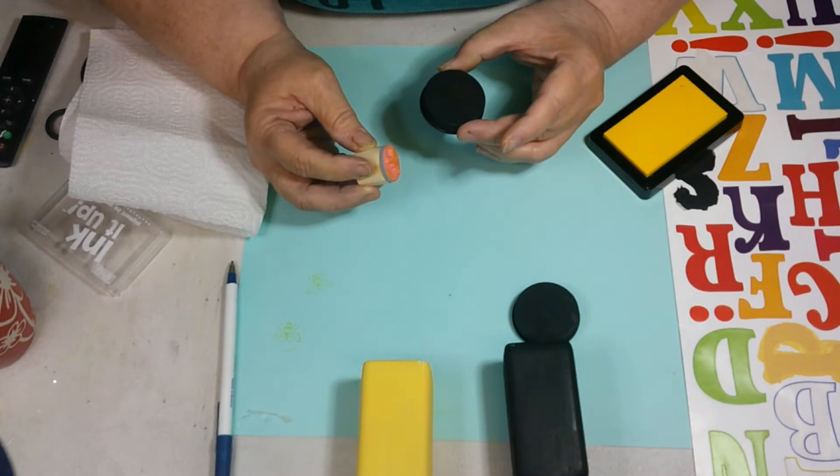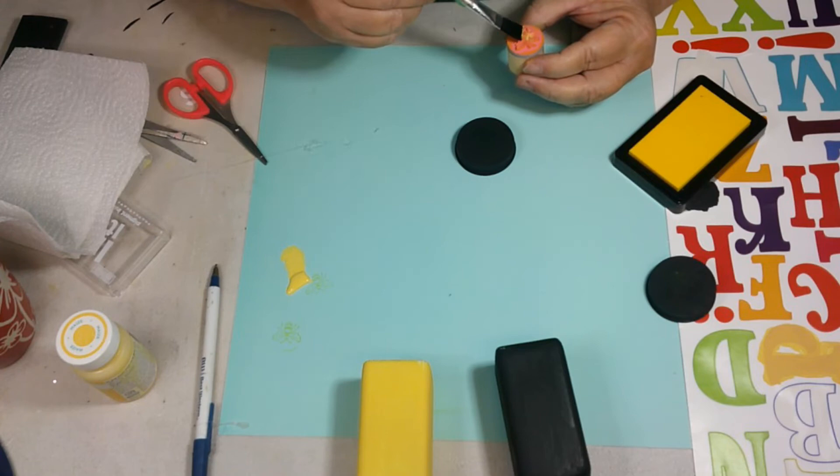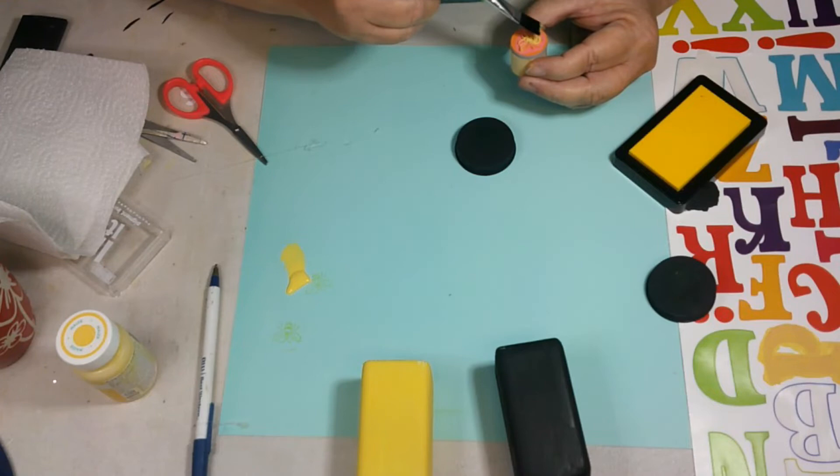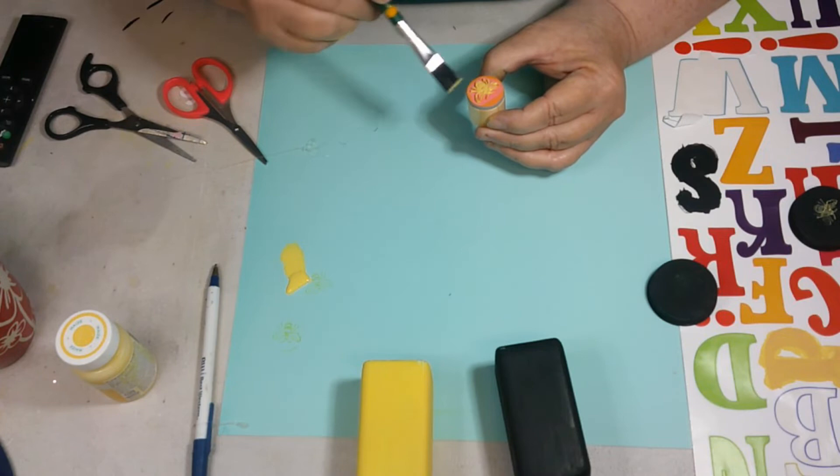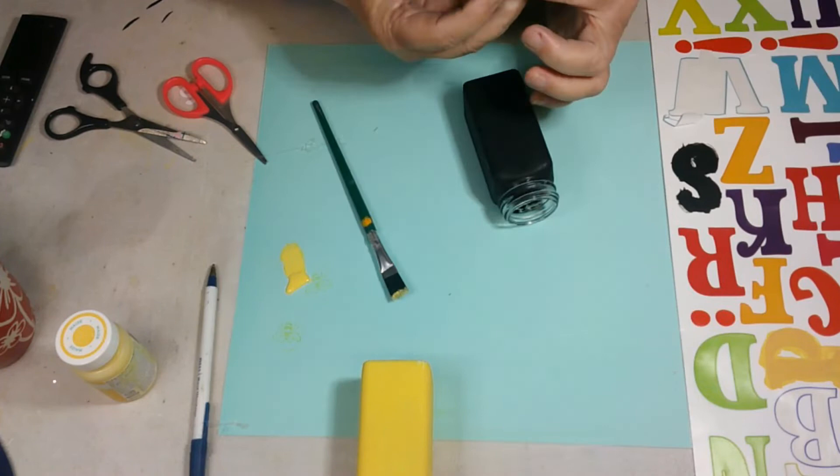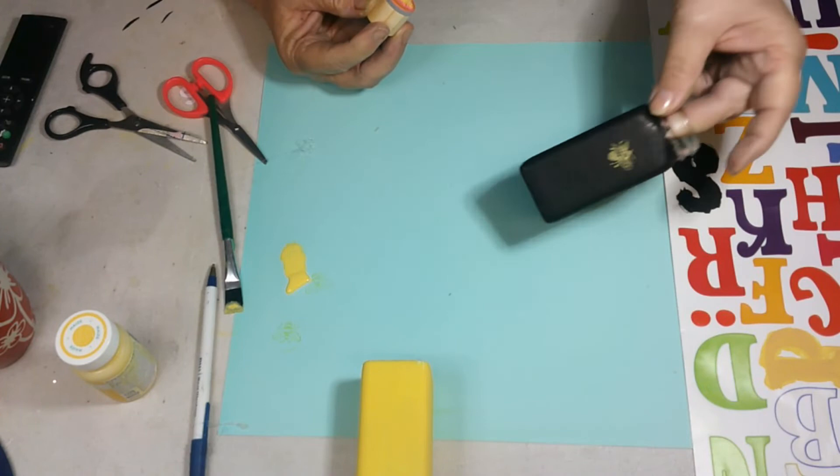Just the top of it. Try to make sure you get all the little nooks and crannies. Let's try that. There we go. That's better. Don't use the ink. If you're going on black, use paint because the ink just didn't show up. There we go.